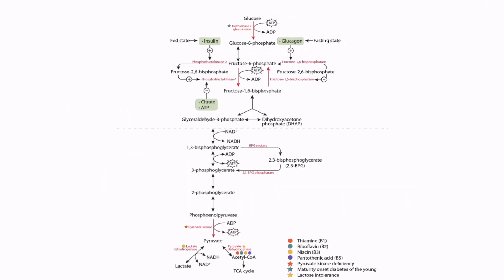On the other hand, in the fasting state, glucagon levels will be high, which will decrease hepatic concentrations of fructose-2,6-bisphosphate, resulting in decreased glycolysis. The liver senses that the tissues do not have enough glucose, so it will halt hepatic glycolysis and instead increase gluconeogenesis to provide the body with the glucose that it needs. Notice that fructose-2,6-bisphosphate normally inhibits fructose-1,6-bisphosphatase, which converts fructose-1,6-bisphosphate to fructose-6-phosphate, ultimately allowing the liver to produce glucose. If fructose-2,6-bisphosphate is decreased, then the activity of this enzyme will be increased, resulting in increased gluconeogenesis.